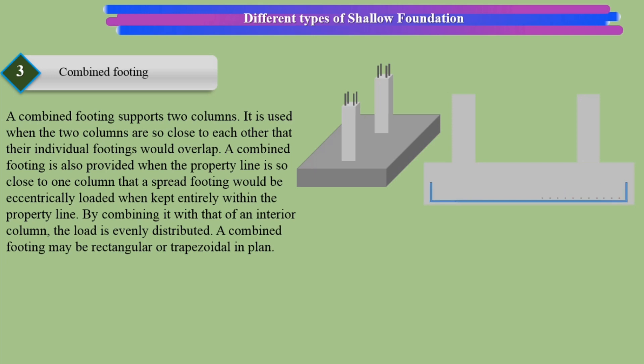A combined footing is also provided when the property line is so close to one column that a spread footing would be eccentrically loaded when kept entirely within the property line. By combining it with that of an interior column, the load is evenly distributed. A combined footing may be rectangular or trapezoidal in plan.